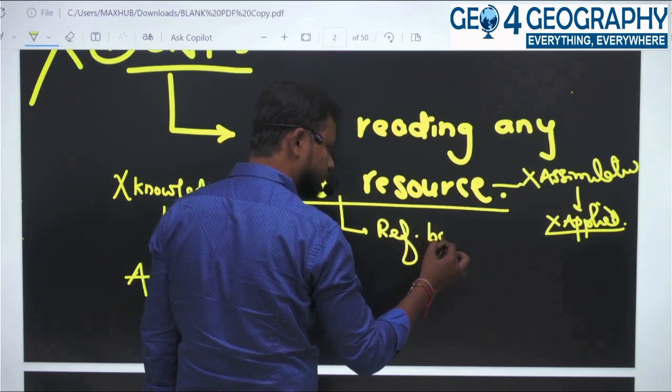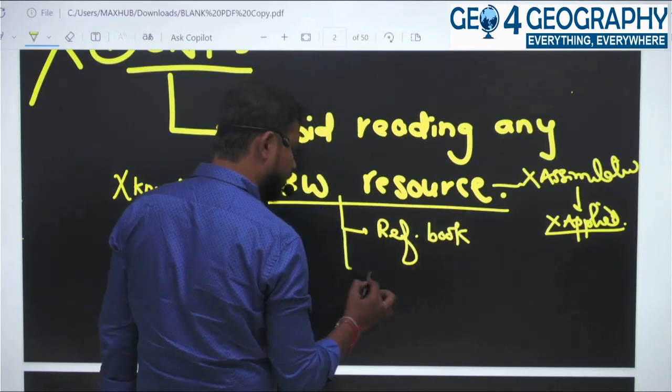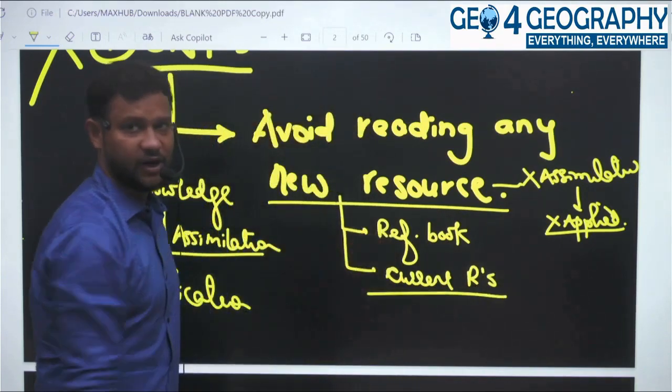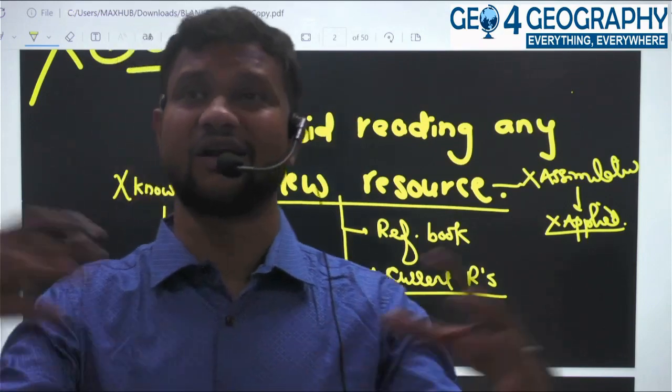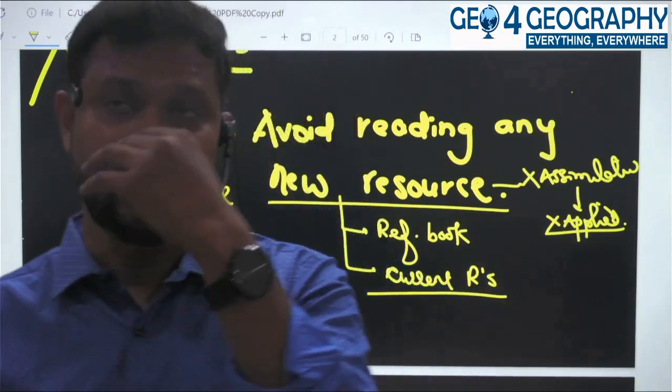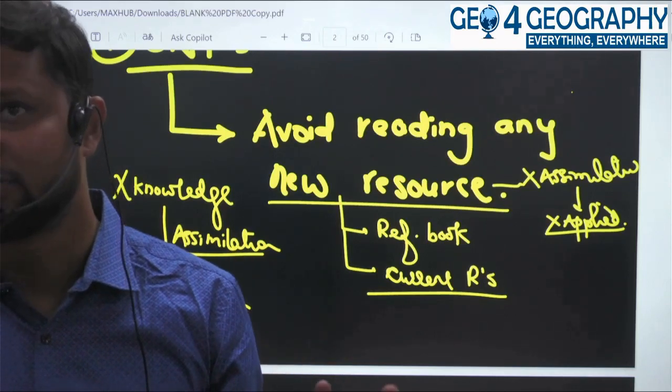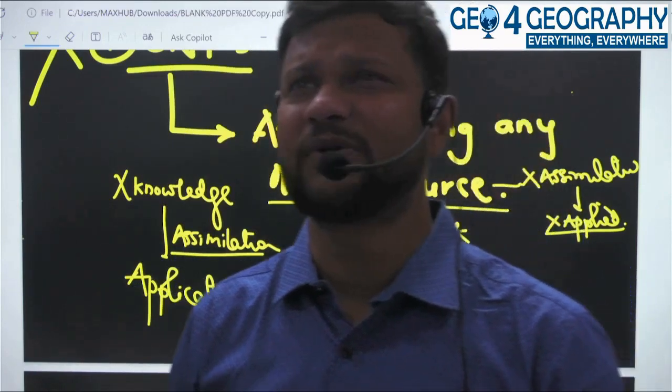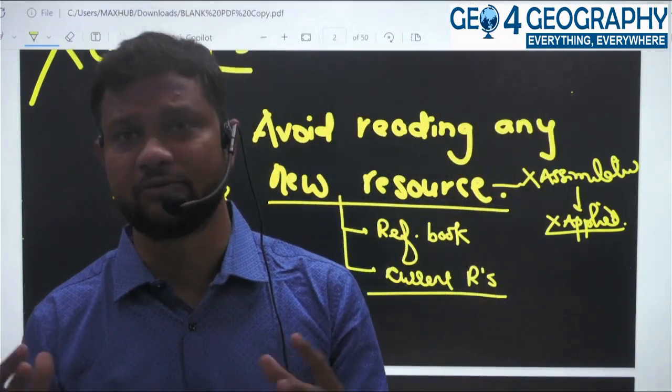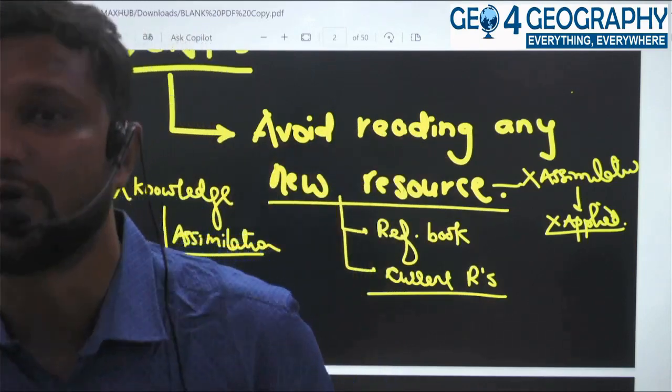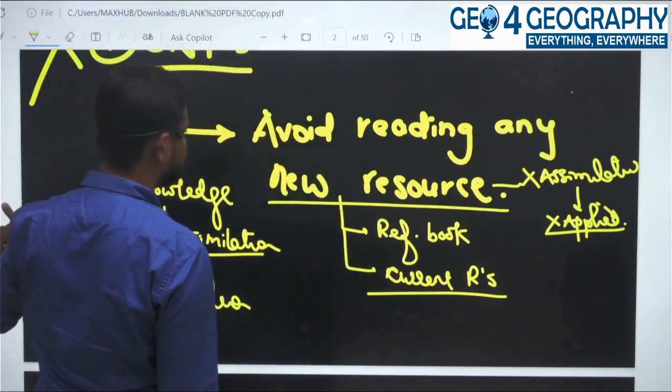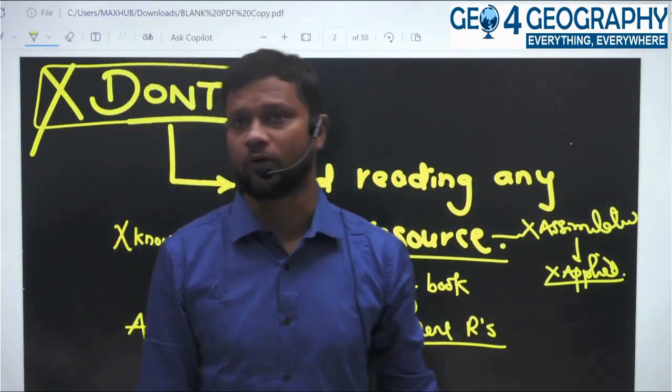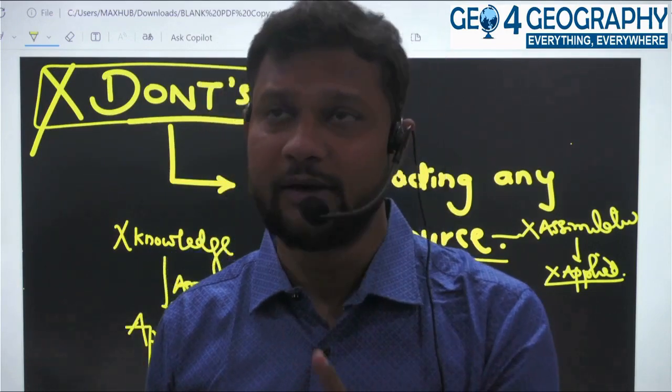If assimilation is not happening, then the applied questions or even theoretical questions on that concept you just don't understand properly will not give you effective results. It would rather lead to confusion. You will end up attempting negatives. Any new source I am talking about - any reference book, equally any current affair sources. Reading newspaper is fine, but if you have many magazine issues left and you want to read all of them, don't do it now.